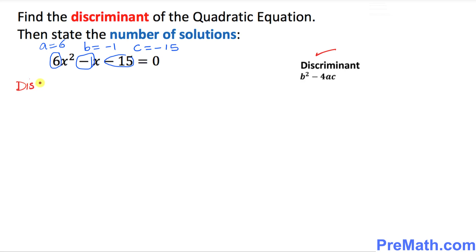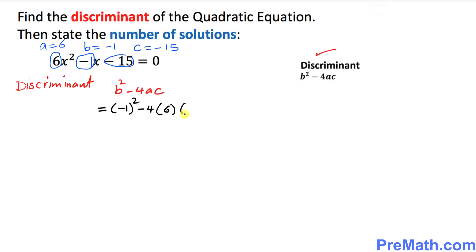We know that the discriminant is b squared minus 4ac. Let's go ahead and calculate it by plugging in the values. b squared is negative 1 squared, minus 4 times a which is 6, times c which is negative 15. Negative 1 squared is 1, and multiplying the rest out gives us 360 with a positive sign. So we simply get 361.